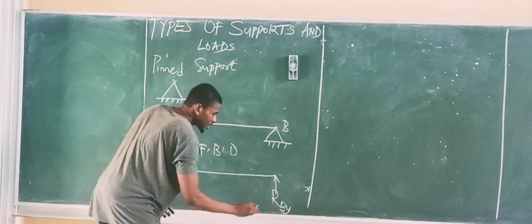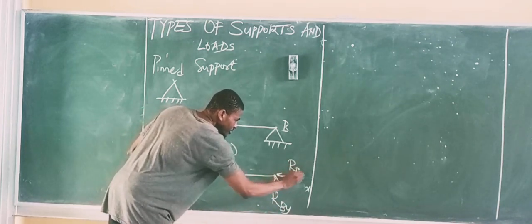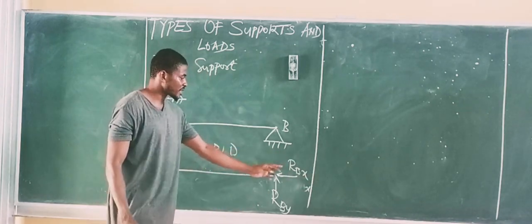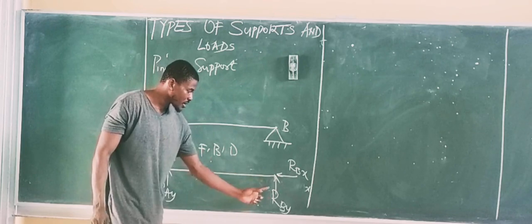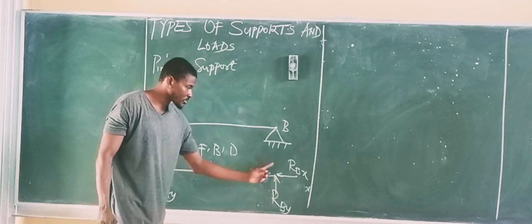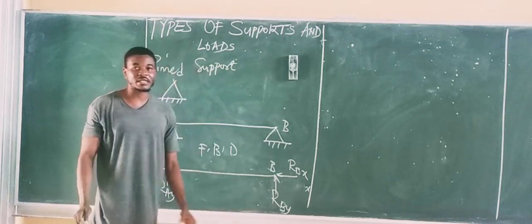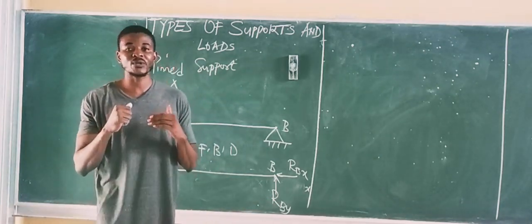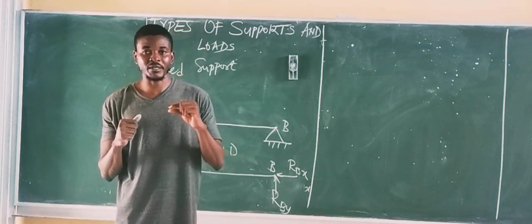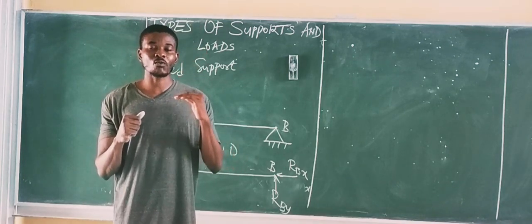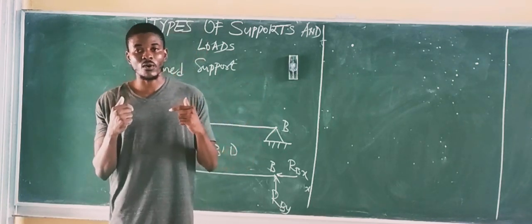Similarly, R-B-Y represents the vertical reaction at point B, and R-B-X represents the horizontal reaction at point B. So whenever we encounter a Pinned Support on a beam, we always have two reactions: one vertical and one horizontal, both acting at the point of occurrence.